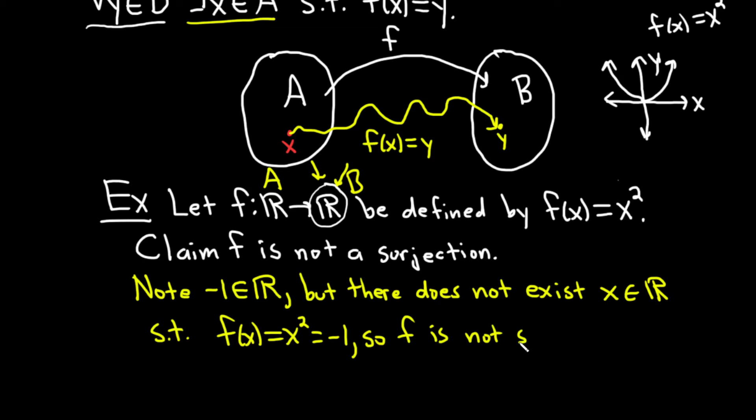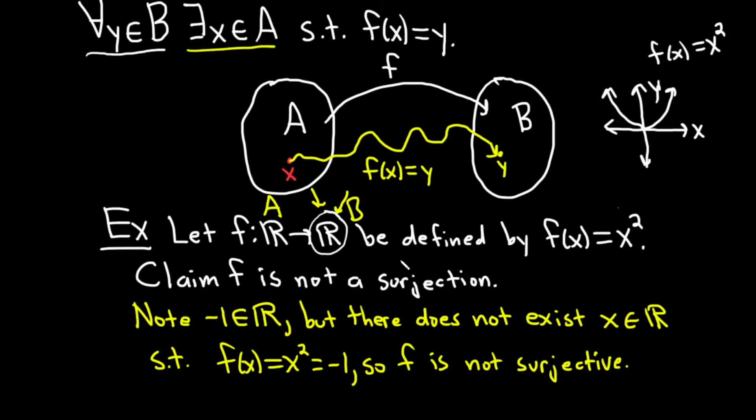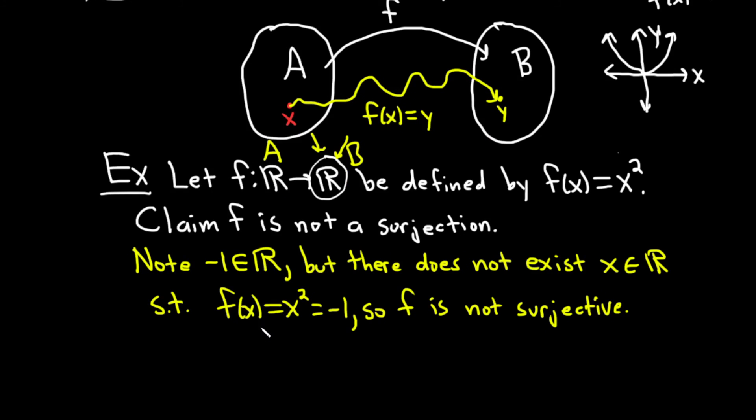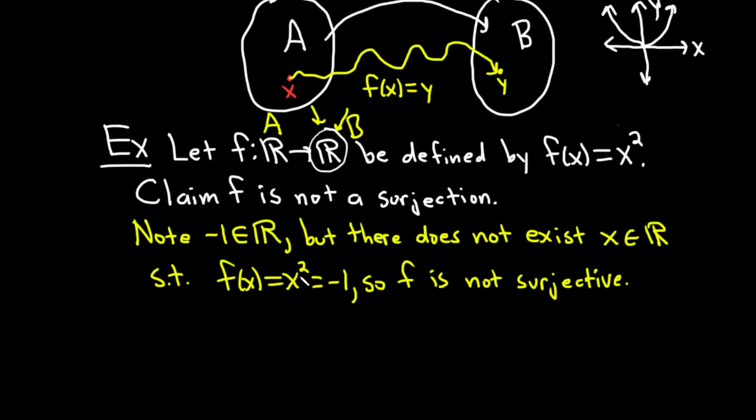Just a simple example. So to violate the definition of a surjective function, all you have to do is produce one value in the codomain where it fails. And in this case, we could have picked any negative number. You could have picked negative two, you could have picked negative pi. And the reason is, for real numbers, whenever you have x squared, it's always going to be non-negative. In other words, it's going to be zero or it's going to be positive, but it can never be a negative number.